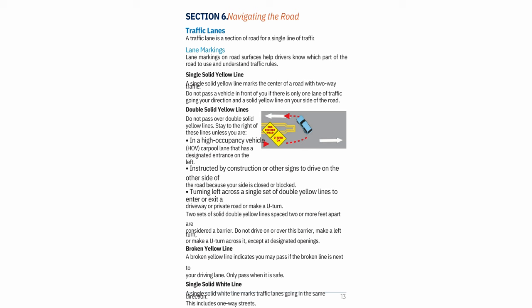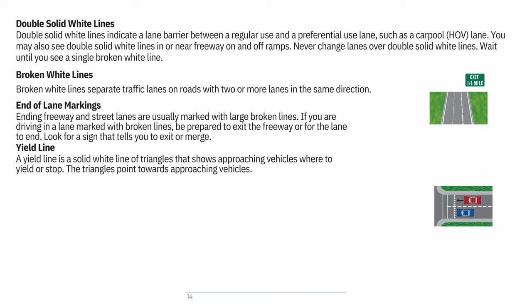Do not drive on or over a double yellow line barrier, make a left turn, or make a U-turn across it, except at designated openings. Broken yellow line: indicates you may pass if the broken line is next to your driving lane — only pass when it is safe. Single solid white line: marks traffic lanes going in the same direction, including one-way streets. Double solid white lines: indicate a lane barrier between a regular use and a preferential use lane, such as a carpool/HOV lane. Never change lanes over double solid white lines.